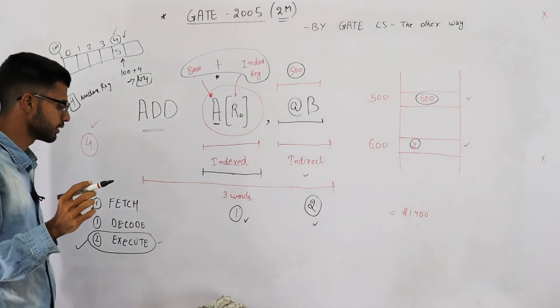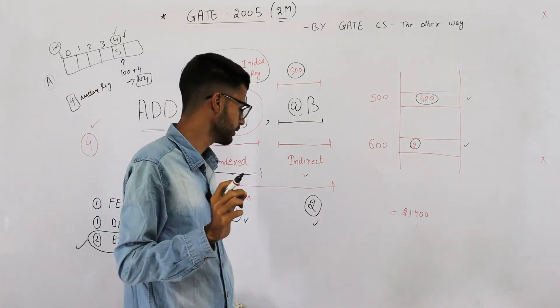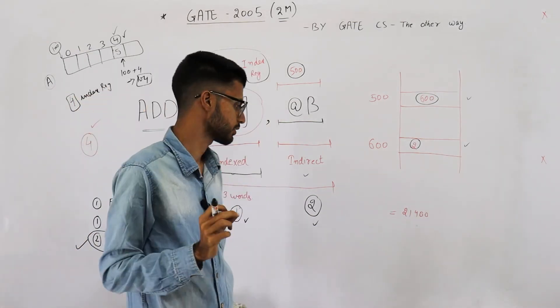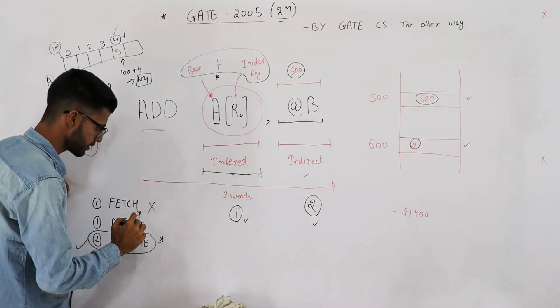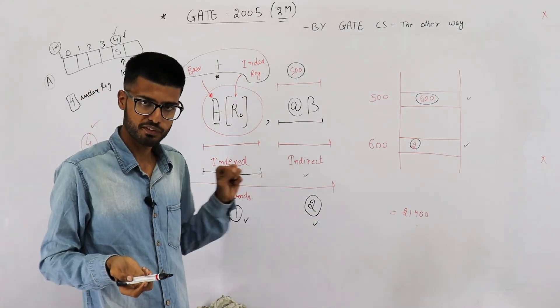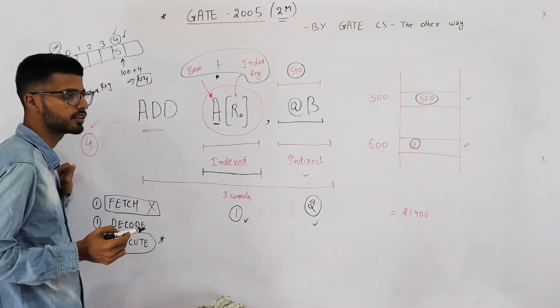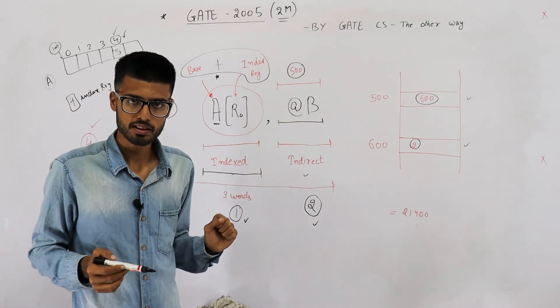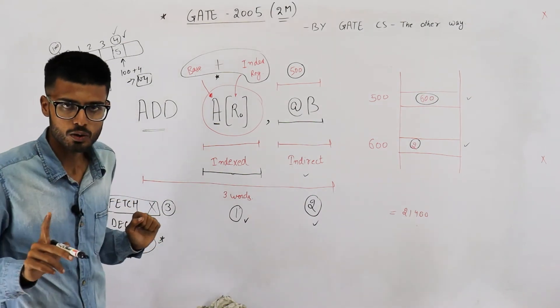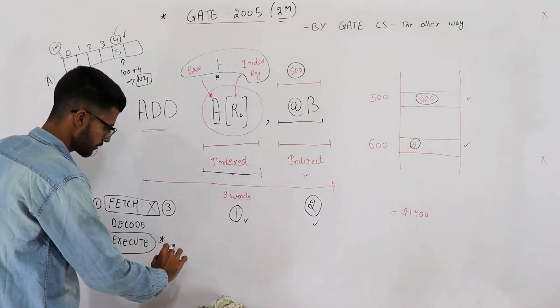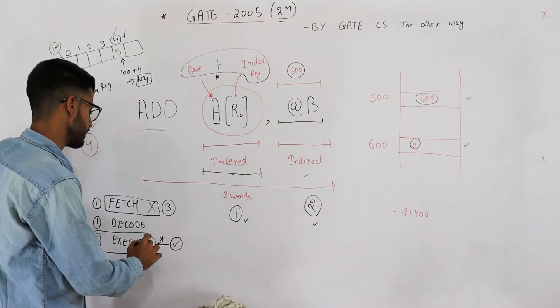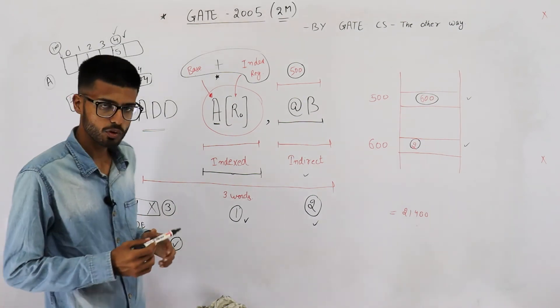Now one common mistake that students generally do is they don't read the question carefully, and in hurry you might skip this word. They are asking only about the execution cycle of the instruction. That means you don't need to consider the fetch phase, because CPU obviously needs to fetch the instruction first. And this instruction being a three word instruction will require three memory accesses. So these three accesses which are required for fetching the instruction are not to be counted because they have clearly mentioned we are only required to calculate memory accesses that are required in execution phase. So the answer is four.